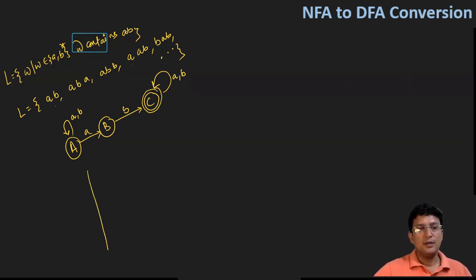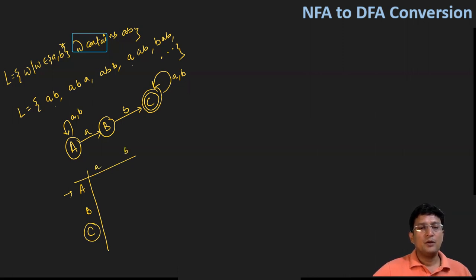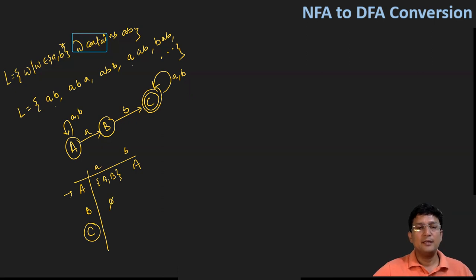Let's try to convert this NFA to a DFA. For the conversion, I'll design the transition table for the NFA first. In the transition table, A is the start state and C is the final state. On symbol 'a', from A you may move to A or also go to B. On symbol 'b' from A, it is undefined — write phi or blank. On symbol 'b' from B, you move to state C. On C with symbol 'a' or 'b', you remain at state C.